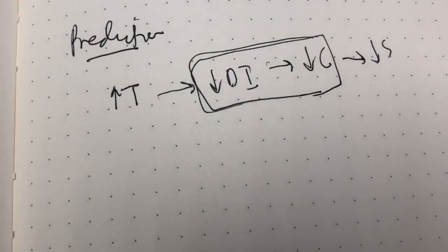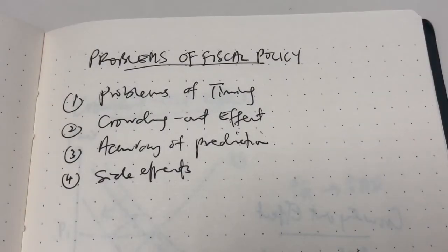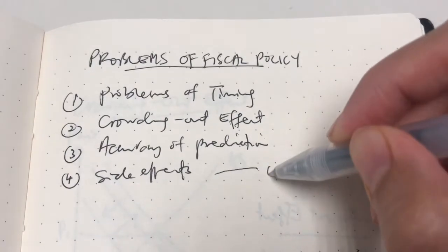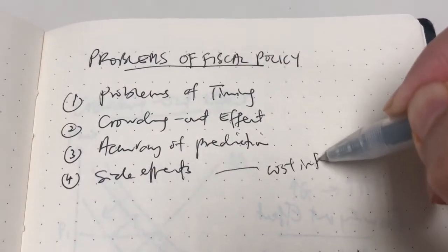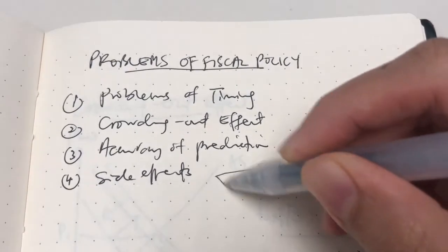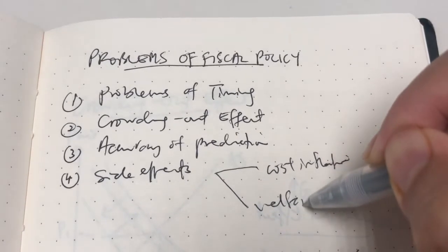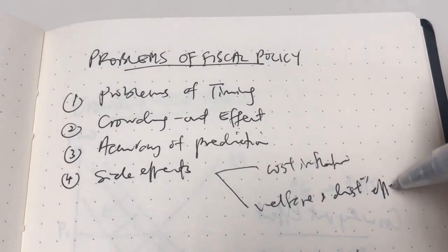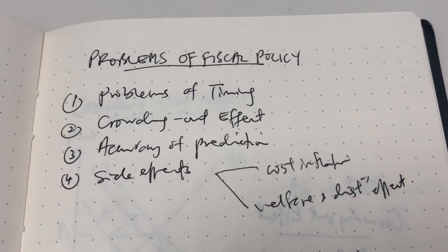Since the government is really not sure how effective this prediction is, that would be the problem of fiscal policy. Besides that, it is also very difficult to predict the size of the multiplier. There are also other side effects of fiscal policy,